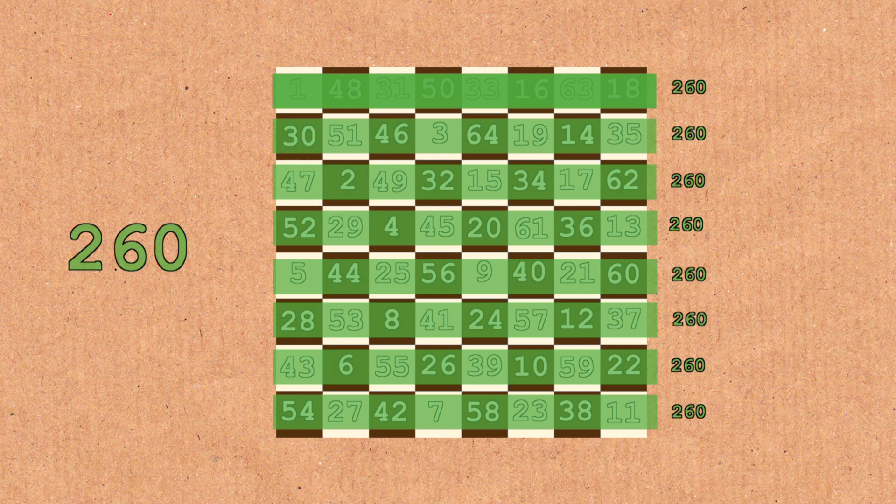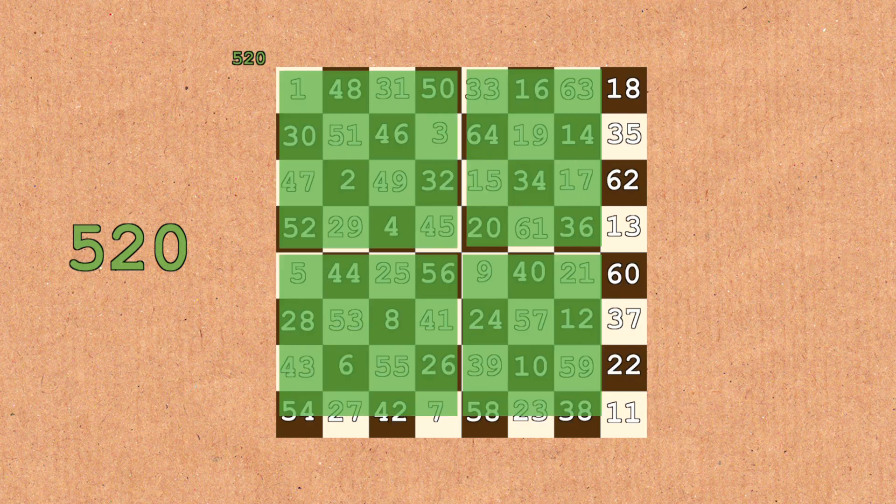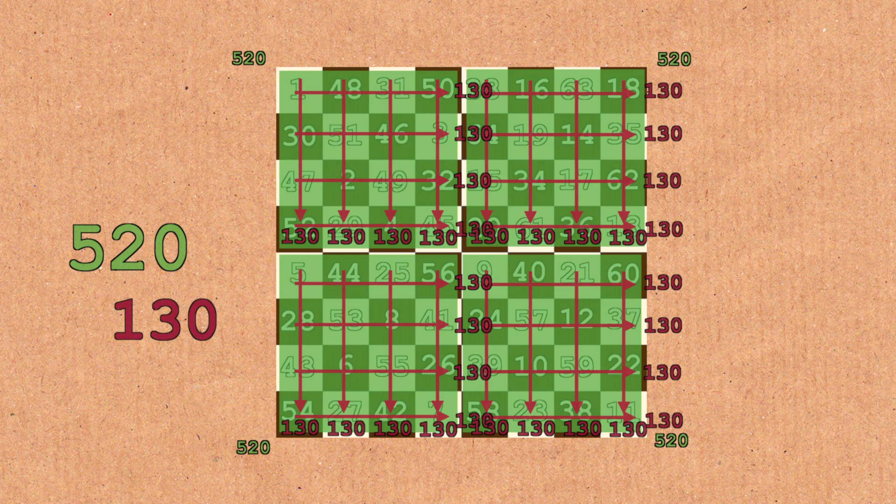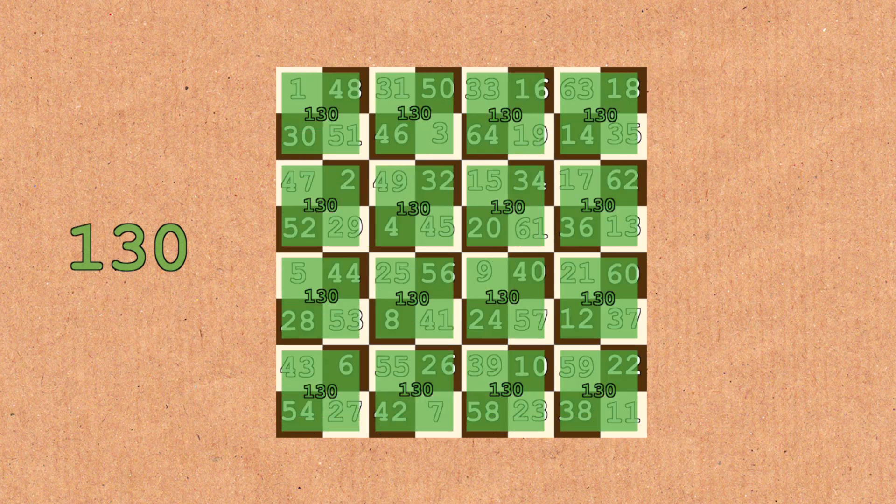And as if that's not enough, have a look at this. Each of these quadrants, each of the rows and columns in each of those quadrants sums to 130, which is interesting. And as if that's not enough, each of these two by two sections sum to 130.